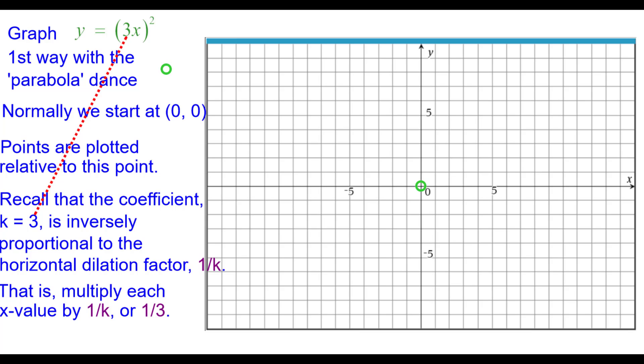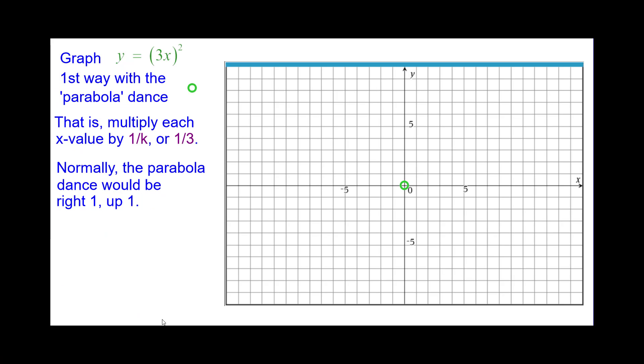That is, we are going to multiply each x value by the reciprocal of k, which is 1 third. Normally the parabola dance would be right 1 up 1. And so for this one it is going to be right 1 third up 1 because 1 third times 1 is 1 third.